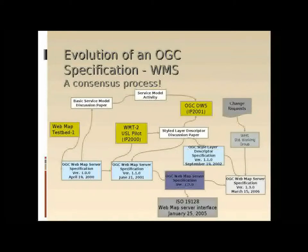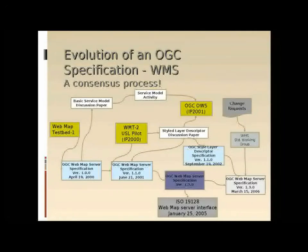The WMS standard was the product of the first Web Map testbed held in the late 1990s. After the first version, additional testbeds fed into the standard and continue to do so to this day. OGC forms standards working groups whenever a sufficient number of change requests have been gathered to warrant a new version. Change requests are gathered through the testbed process but also from external sources. In this diagram, the white boxes represent spin-offs, and from WMS these include the OWS common standard and the SLD standard. In 2005, the OGC WMS standard also became an ISO standard.